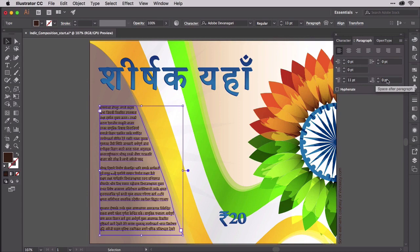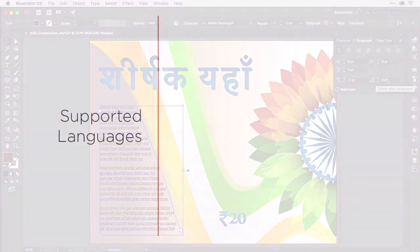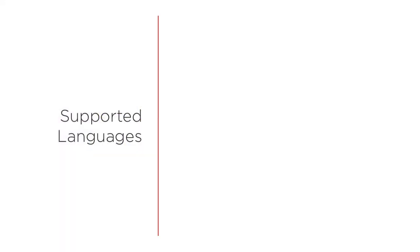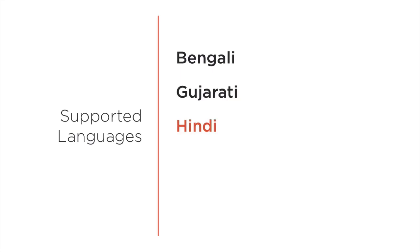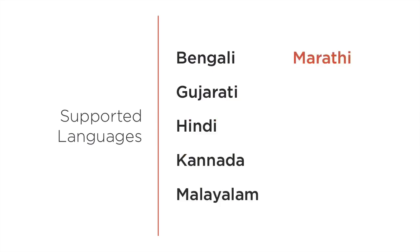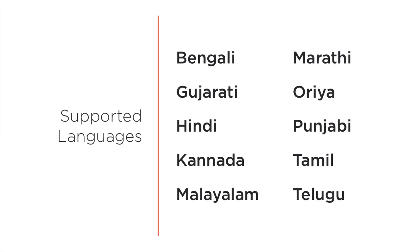On different texts, the improvements might have been even more significant. Both Middle Eastern and South Asian Composers support the following ten languages: Bengali, Gujarati, Hindi, Kannada, Malayalam, Marathi, Oriya, Punjabi, Tamil, and Telugu. That's the extent of the Indic and South Asian options. Next, let's move into working with the East Asian type options.